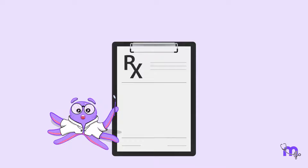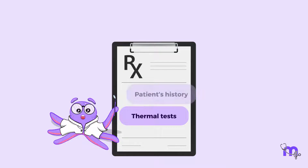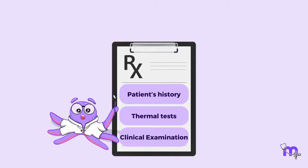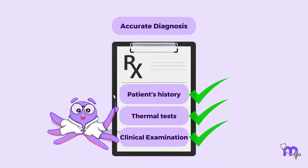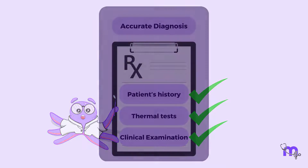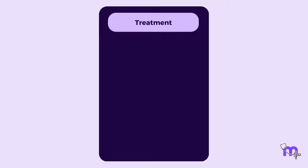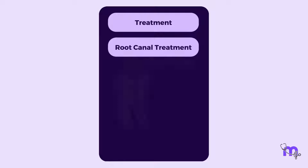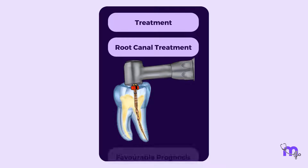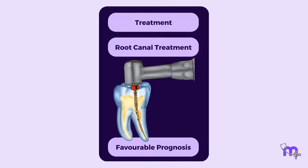Therefore, a correlation of cold and electric tests, along with a history of pain in conjunction with a thorough clinical examination, should establish a correct diagnosis. The treatment of pulp necrosis is root canal treatment, with a favorable prognosis if performed appropriately.